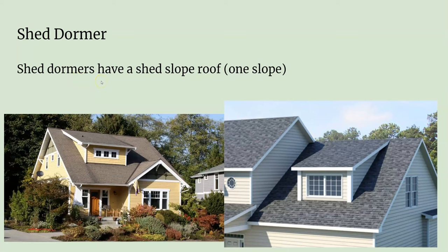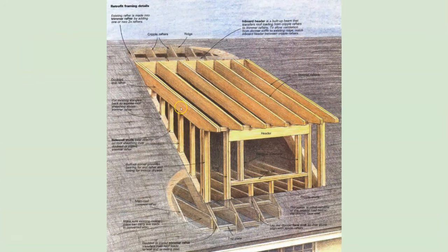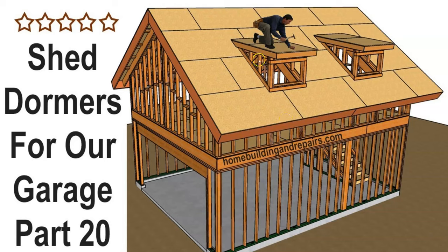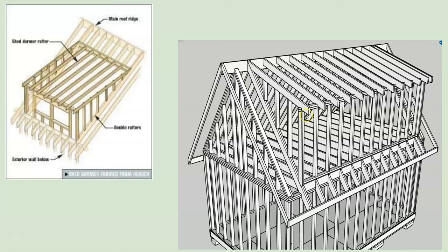Another style is called a shed dormer. Shed dormers have a single-slope shed roof, and it usually doesn't have the same slope as the larger roof. Most shed dormers create quite a bit more living space for the homeowner. You can see it's just one sloping roof here, with a different slope than the main roof. The wing walls on the sides are framed up similar to gable dormers. A large shed dormer can create a big living space on the second floor.